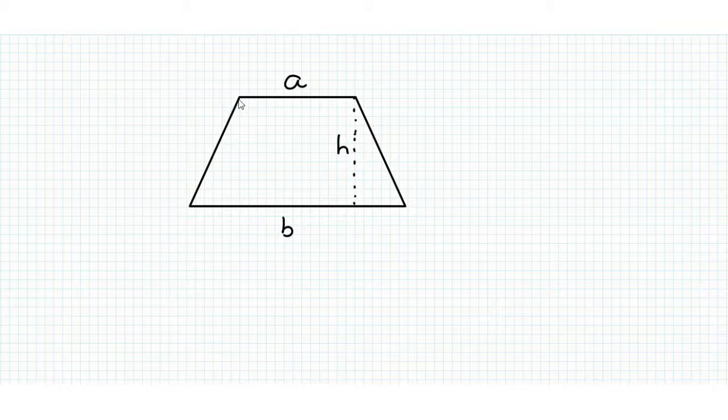I'm going to draw another line here to define a rectangle within the trapezium. Now we've got three shapes: a triangle here which is identical to this triangle here, and a rectangle in the middle. To find the area of the trapezium, all we have to do is add up these three areas.